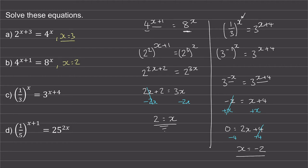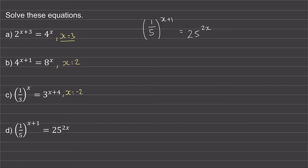Do you want to try question d yourself? You can pause the video and when you come back we'll go through the worked solution. Welcome back if you had a go. The first thing we're going to do is write this 1 fifth using index notation. So this becomes 5 to the power of negative 1, which we're raising to the power of x plus 1. And the 25 is 5 squared, which we're raising to the power of 2x.